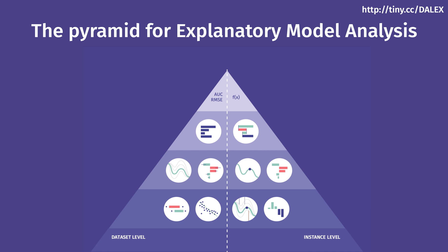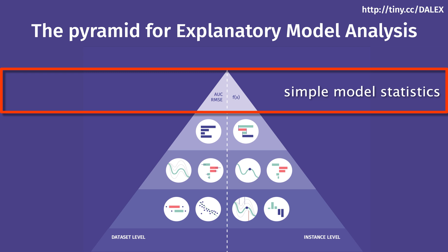The explanatory pyramid is composed of levels. In each subsequent one, we explore more and more deeply the behavior of the model. In the first level are raw model predictions and model statistics, which can be described by single numbers, like model performance measures.